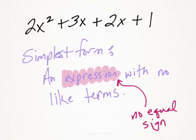And remember that expression means it has no equal sign. So this is an expression. If it were an equation, there would be an equal sign and then some type of value to the right of the equal sign. So for this expression here, in simplest form it would be 2x² plus 5x. We just add these two together plus one.